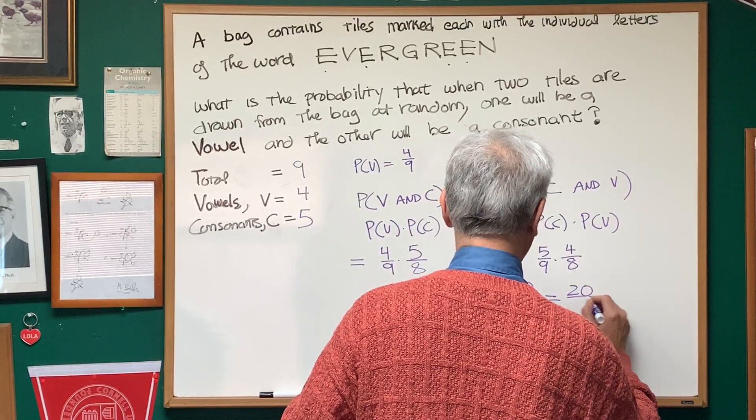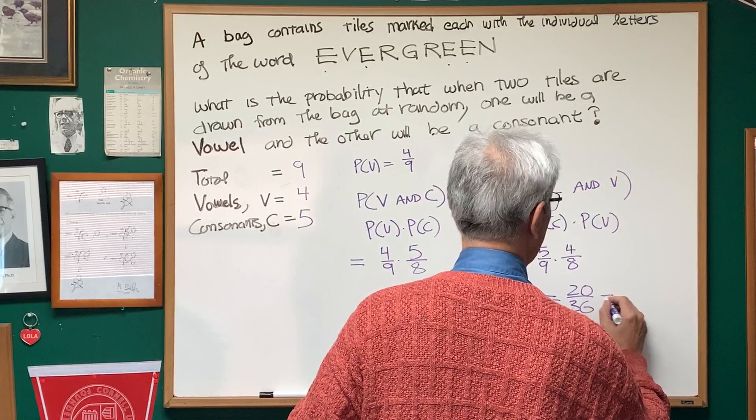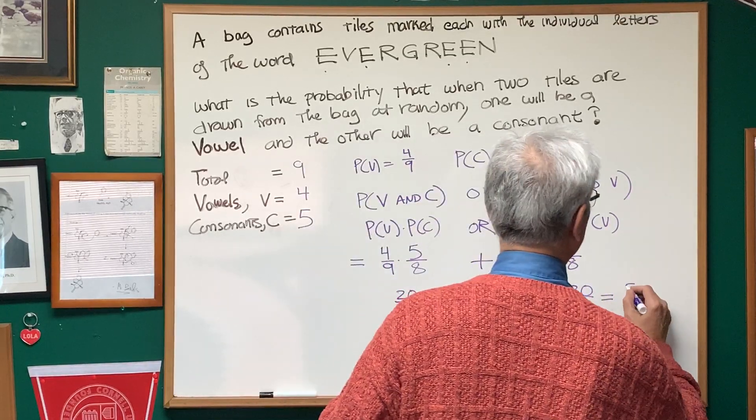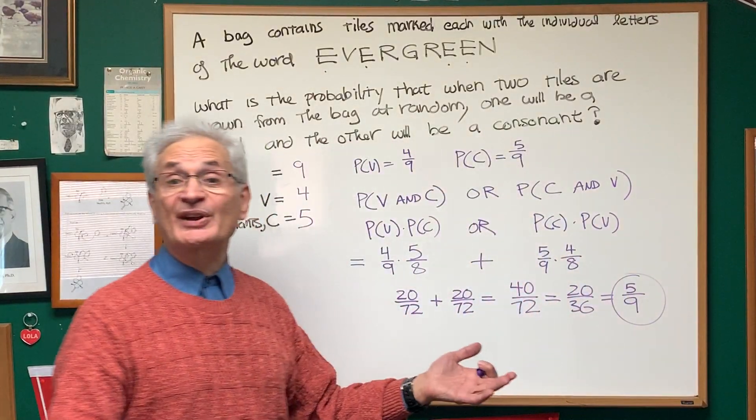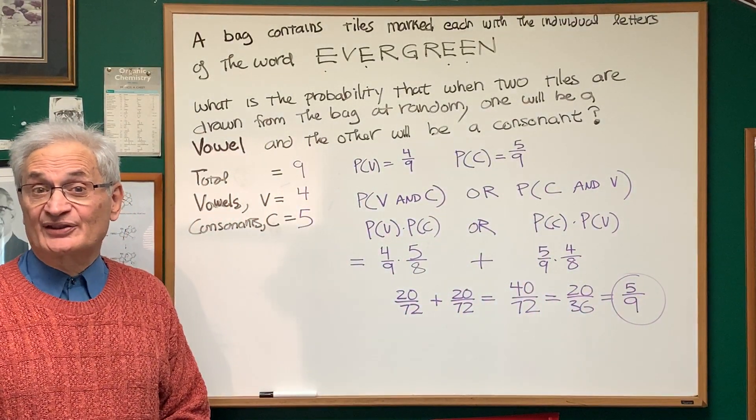Let's reduce that. Half of 40 is 20. Half of 72 is 36. Four goes into 20 five times. Four goes into 36 nine times. And there we have it. The answer is five ninths.